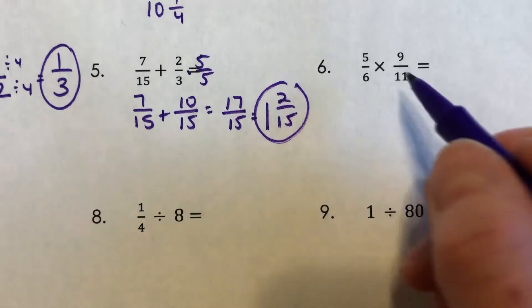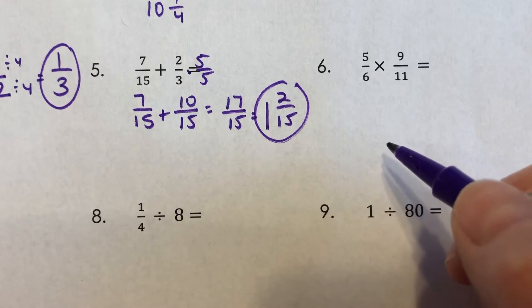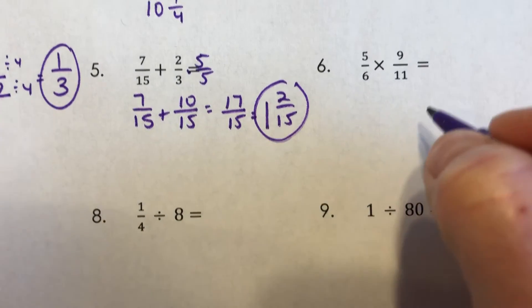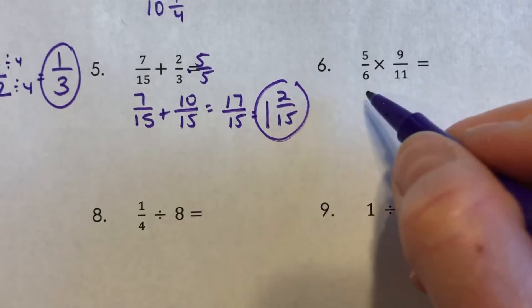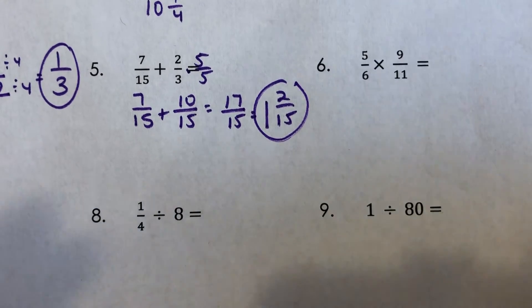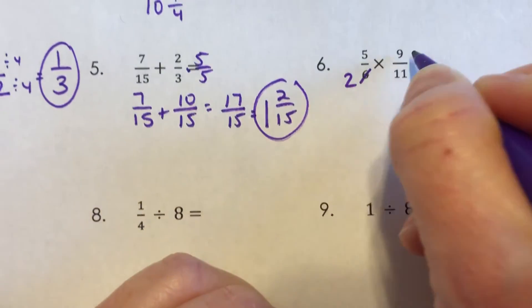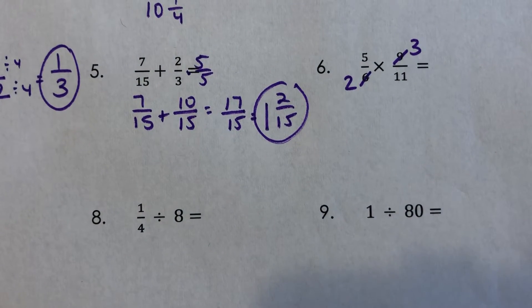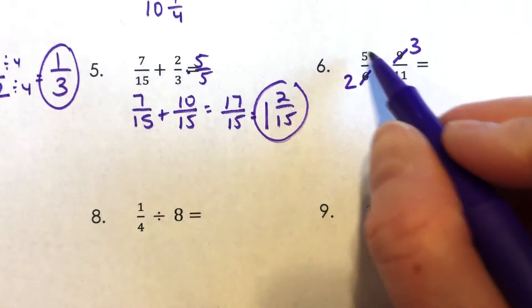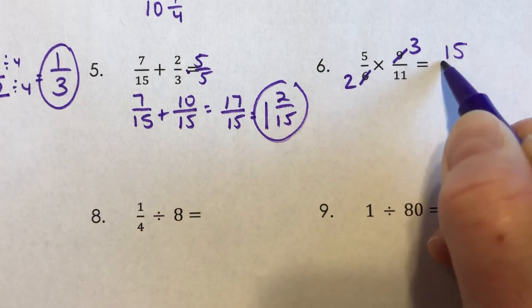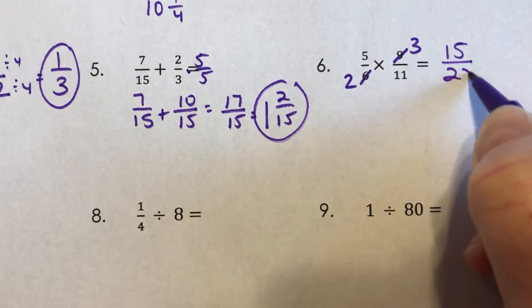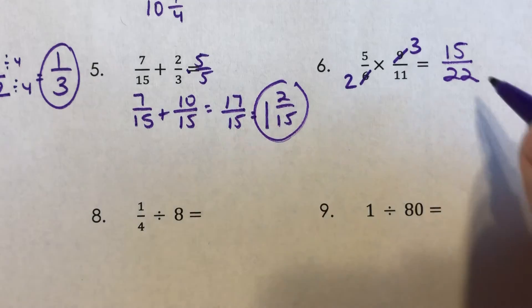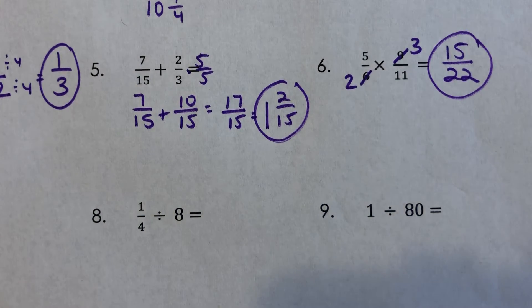For number six, this is multiplication. I don't need a common denominator, but I do want to see if I can cross simplify first. And I see the six and the nine. And I do know that three goes into both of those. Six divided by three is two. And nine divided by three is three. I can't do anything with the five and the 11 though. So now we can just multiply. Five times three is 15. And two times 11 is 22. And there's not a number other than one that goes into 15 and 22. So that one is done.